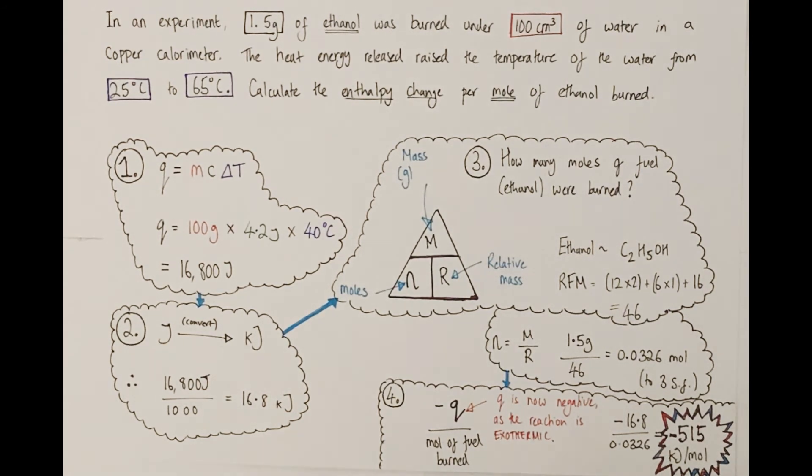So when undertaking an enthalpy change per mole, there are four steps. Q equals MC delta T, convert to kilojoules, calculate moles of fuel, minus Q divided by moles of fuel. I really hope that helps you guys to successfully navigate what can be quite tricky calculations sometimes.